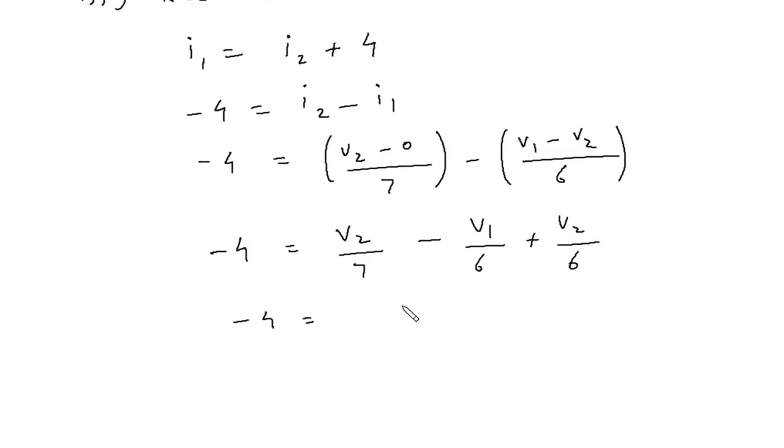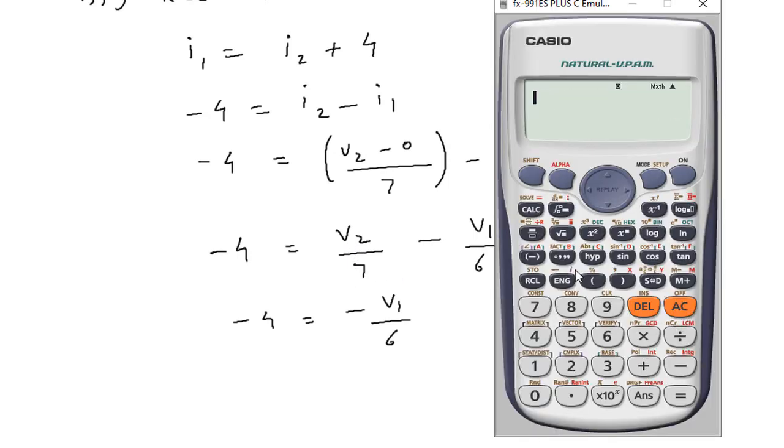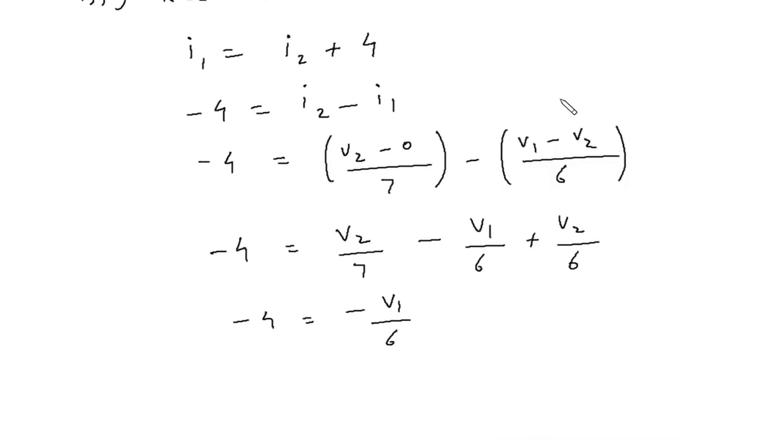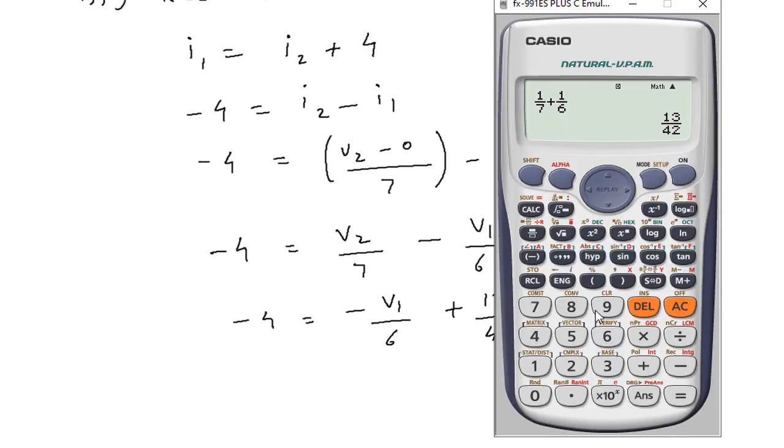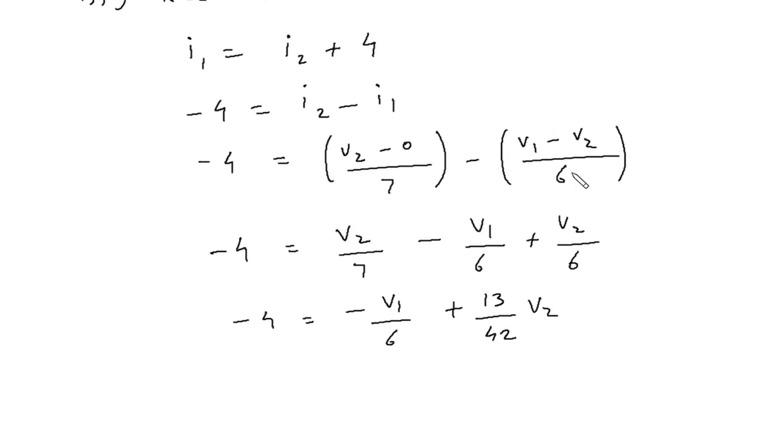Minus 4 equals minus V1 by 6 plus V2 times (1 by 7 plus 1 by 6), which is 13 by 42 V2. Let's say this is equation number 2.